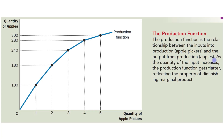As you can see, as the quantity of input — that means the quantity of workers — increases, the production function gets flatter, reflecting the property of diminishing marginal product. The production function is becoming flatter because of diminishing marginal product, which states that as the number of workers increases, the contribution made by each additional worker is continuously declining.